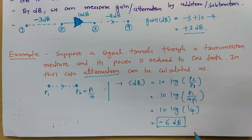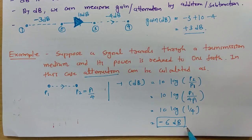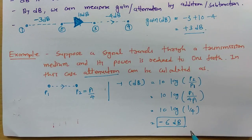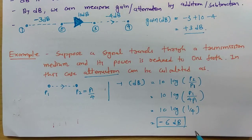Attenuation can be compensated easily by using an amplifier in the circuit. Remember: attenuation will never destroy information, it will never change the shape of the signal — it will just decrease the amplitude of the signal. And attenuation can be easily compensated by an amplifier.